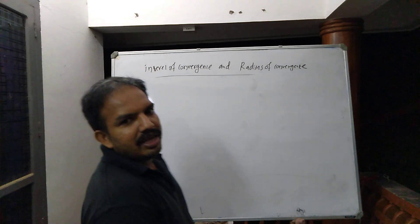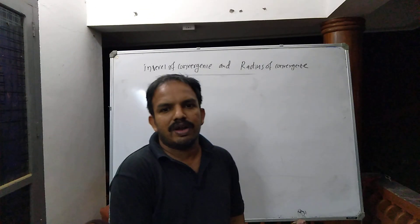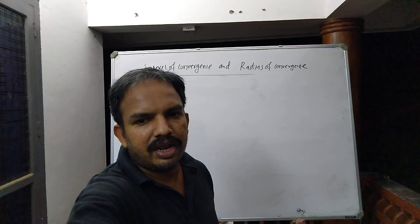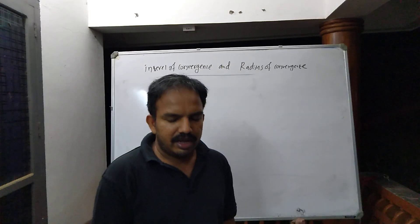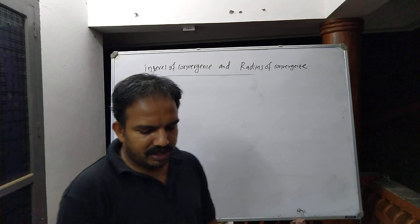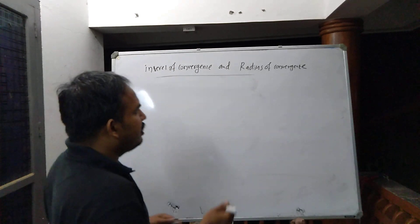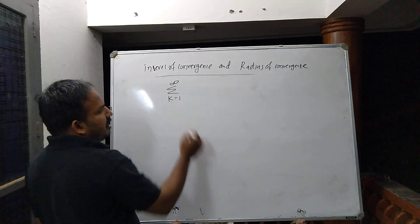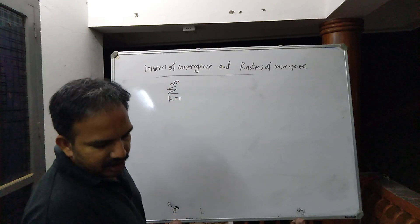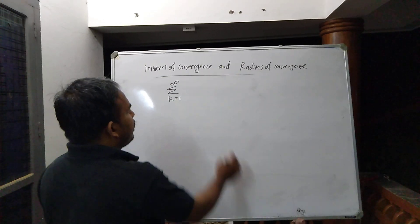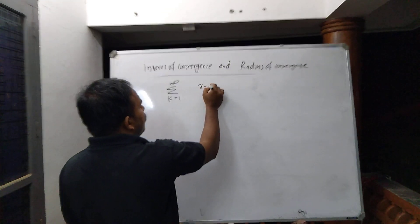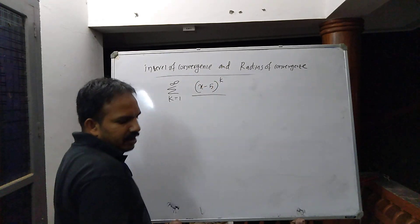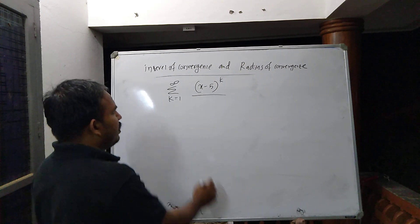Find the radius of convergence and interval of convergence for the series: sigma from k equals 1 to infinity of (x minus 5) to the power k, divided by k squared.